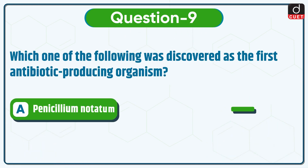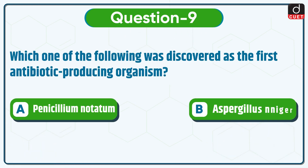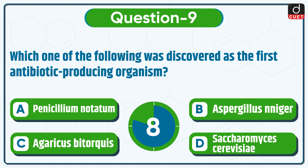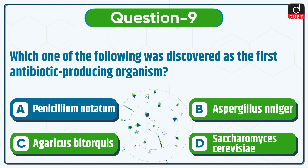Next question: which one of the following was discovered as the first antibiotic-producing organism? Penicillium notatum, Aspergillus niger, Agaricus bitorquis, or Saccharomyces cerevisiae? The correct answer is option A, Penicillium notatum.